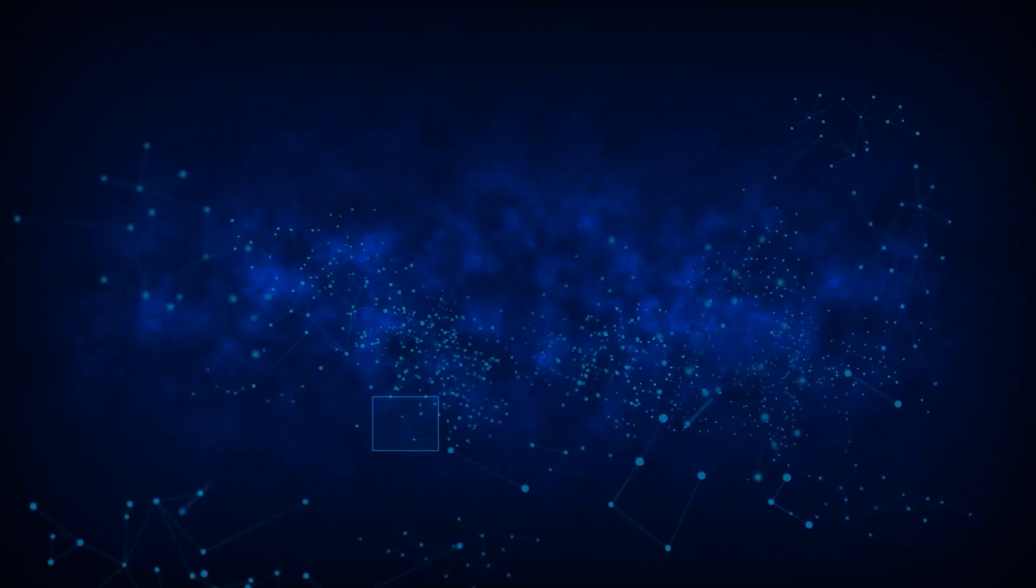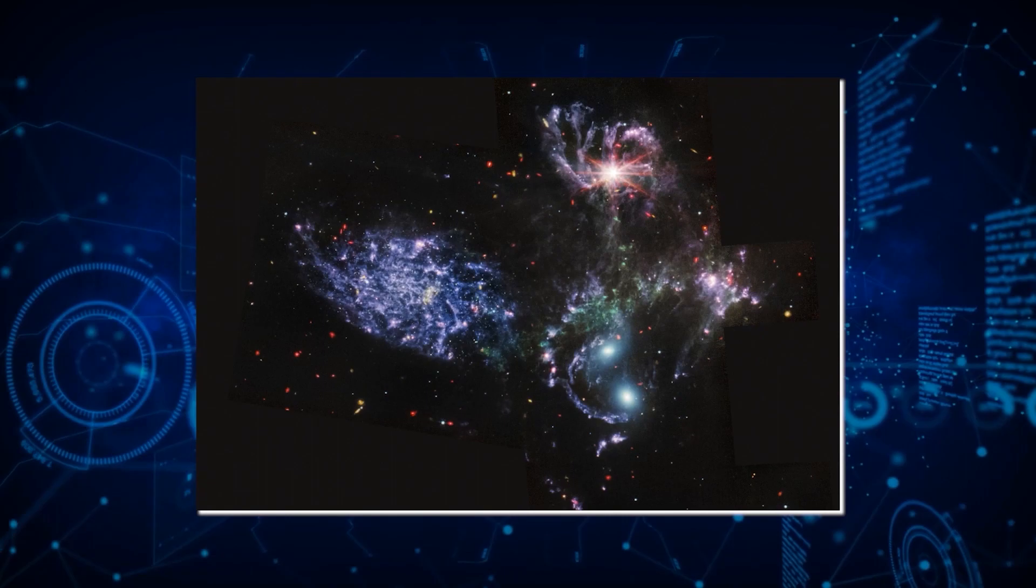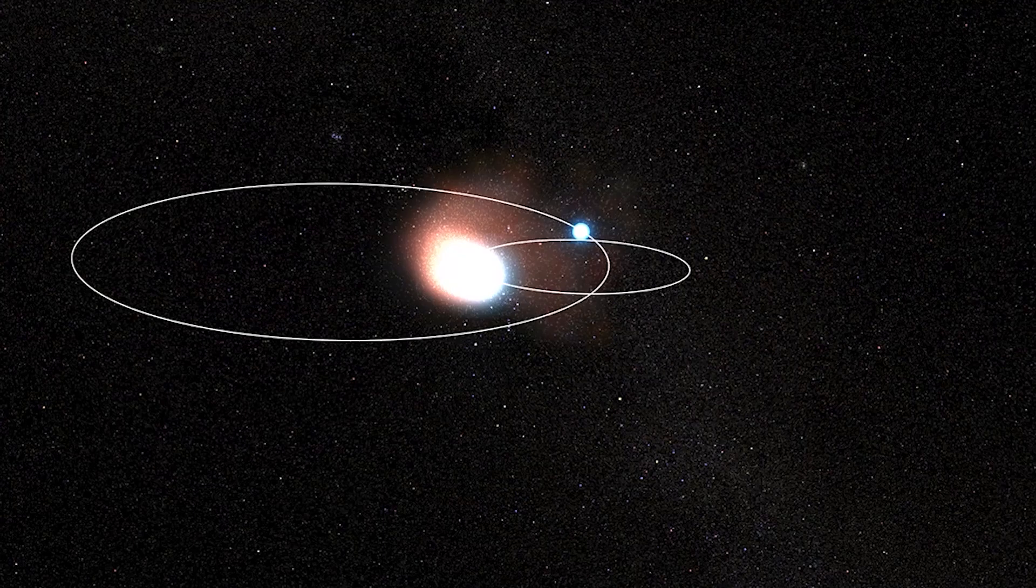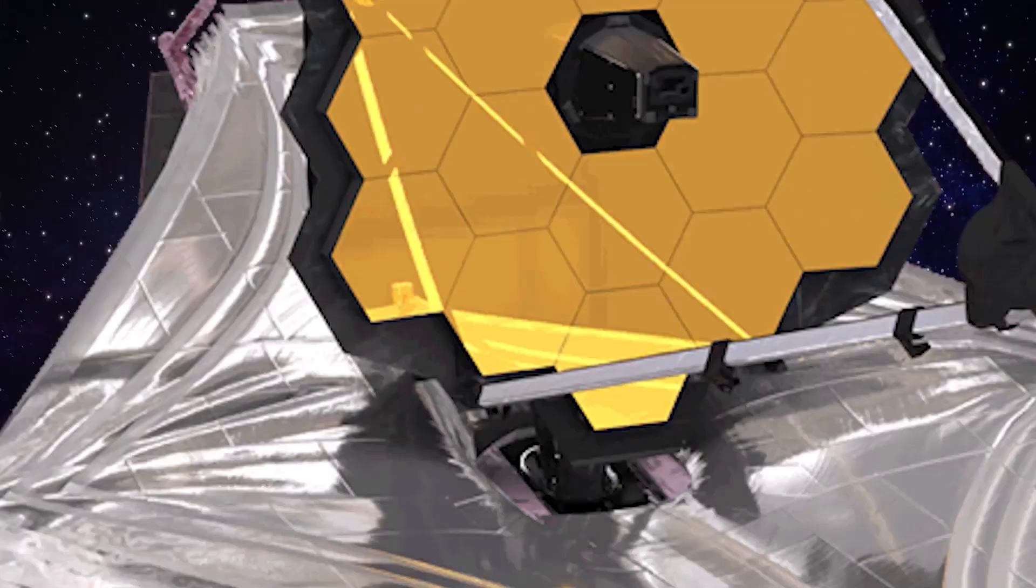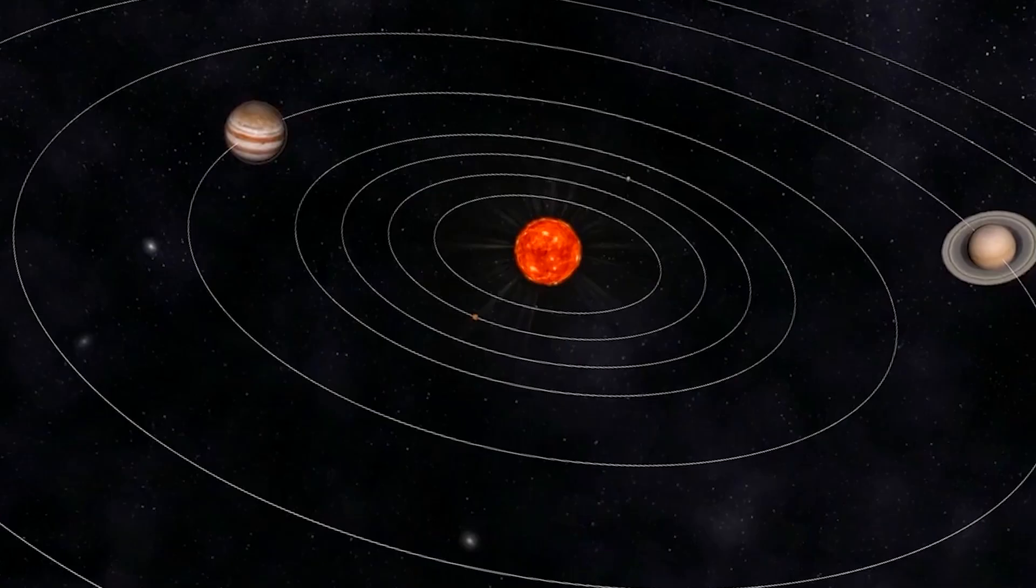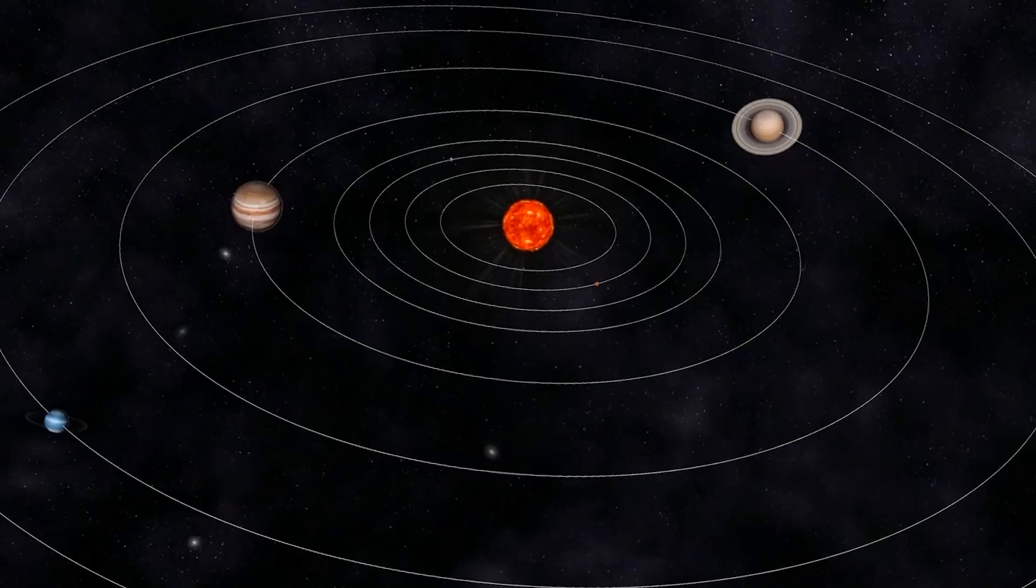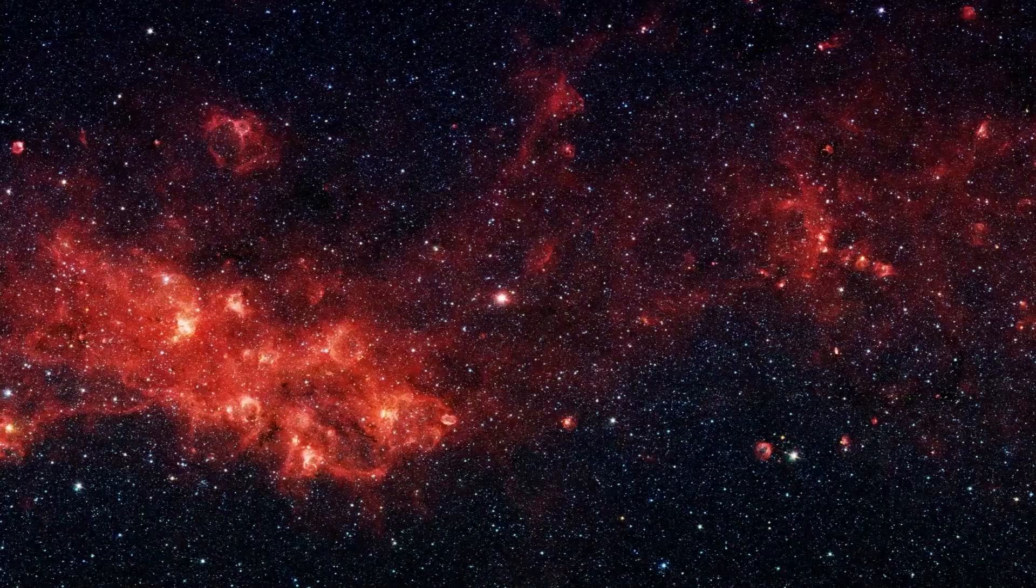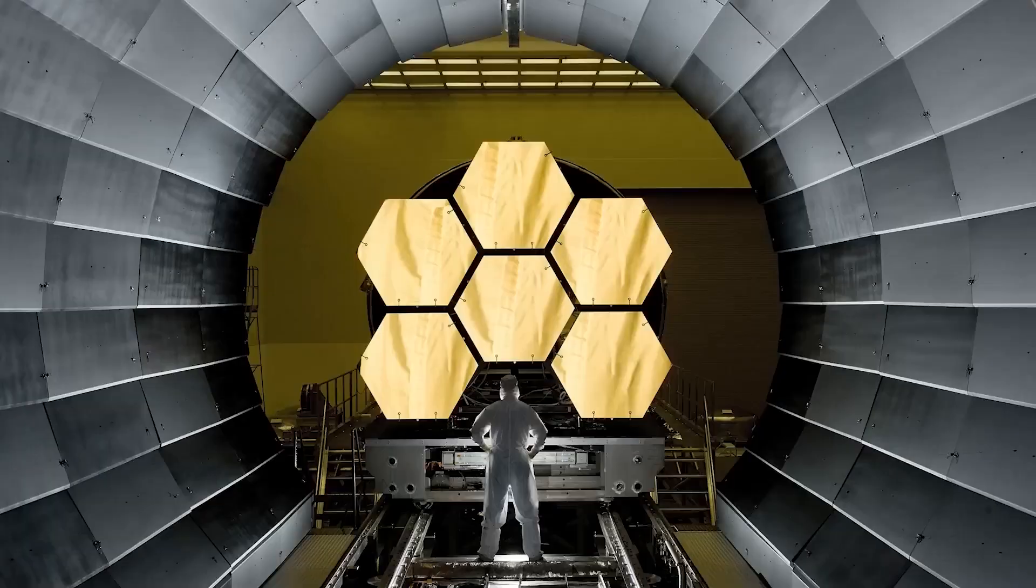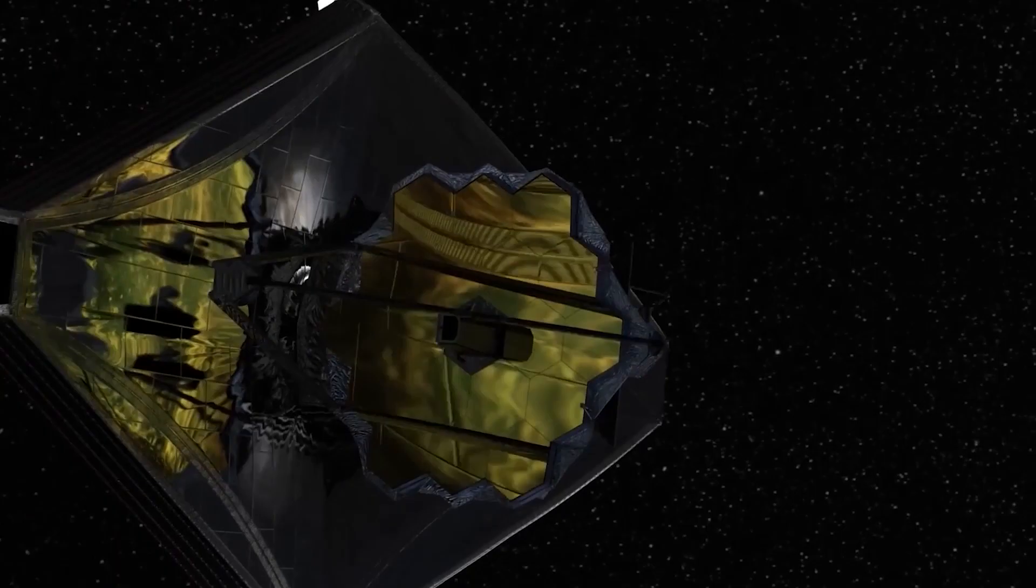However, recent images from the JWST have revealed something shocking on the WR140, a Wolf-Rayet star. The James Webb Space Telescope has found ring-like structures around the WR140 star which might help us understand the formation of the solar system. What is this ring-like structure? What do scientists have to say about it? Join us in this video as we discuss the JWST's insane discovery that confuses the entire space industry.